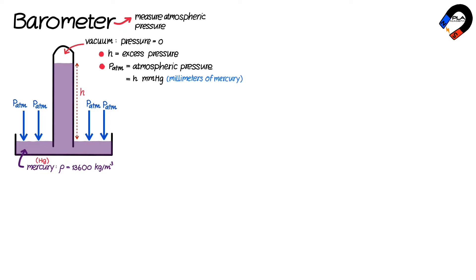We can also calculate atmospheric pressure in pascals (newtons per square meter) using p = ρgh, where p represents pressure, ρ represents density, g represents the acceleration due to gravity,